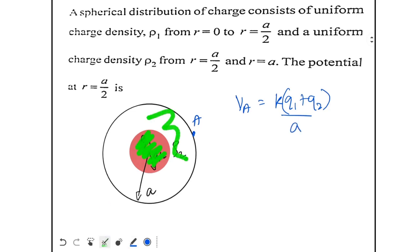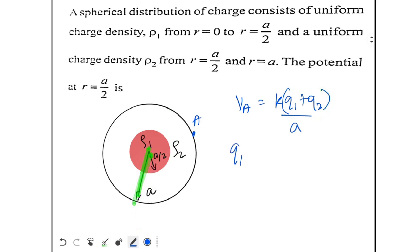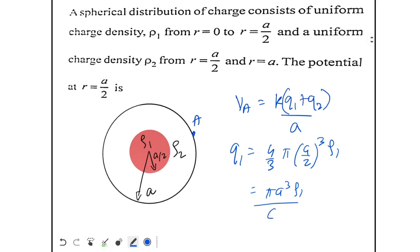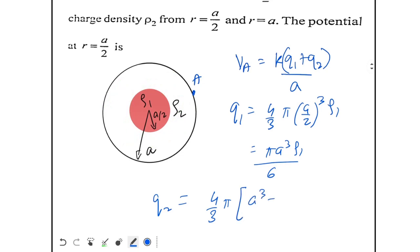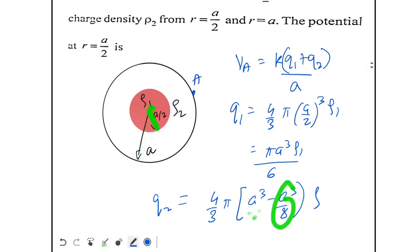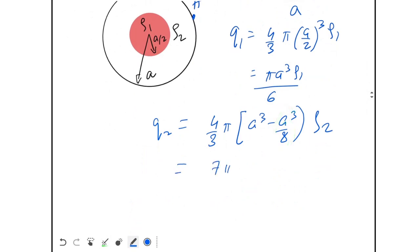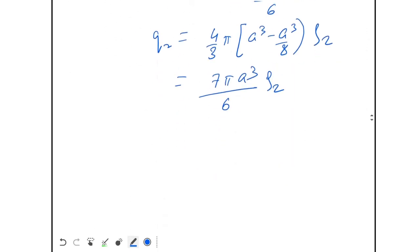Q1 is the total charge of the inner sphere: Q1 = (4/3)π(a/2)³ × ρ1 = πa³ρ1/6. And Q2 is the volume of the shell times density ρ2: Q2 = (4/3)π(a³ − a³/8) × ρ2 = 7πa³ρ2/6.